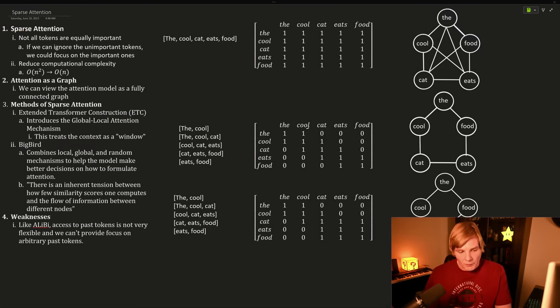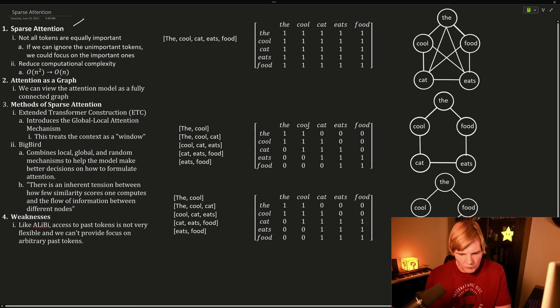If we could decrease the computational memory complexity of our attention layer, then we could pretty trivially increase our context length.